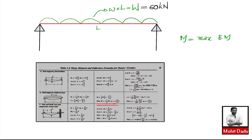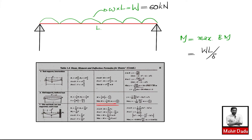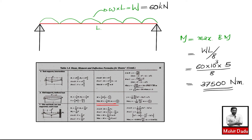From the data book (page 16), for a simply supported beam with a UDL, the maximum bending moment is M = WL/8. Substituting W = 60 × 10³ N and L = 5 m gives M = (60 × 10³ × 5) / 8 = 37,500 N·m. So all the loads — axial force, torque, and bending moment — have been evaluated.